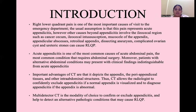Introduction. Right lower quadrant pain is one of the most important causes of visits to the emergency department. The usual assumption is that this pain represents acute appendicitis. However, other causes beyond appendicitis that involve the ileocecal region — such as cecal malignancy, ileocecal intussusception, mucocele, appendicular abscesses, complicated ovarian cysts, and ureteric stones — can also cause right lower quadrant pain. Acute appendicitis is one of the most common causes of acute abdominal pain and the most common condition requiring abdominal surgery. Moreover, patients with alternative abdominal conditions may present with clinical findings indistinguishable from acute appendicitis.